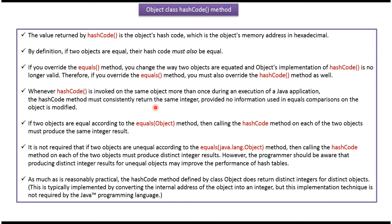Whenever the hashCode method is invoked on the same object more than once during the execution of a Java application, the hashCode method must consistently return the same integer. If two objects are equal according to the equals method, then calling the hashCode method on each of the two objects must produce the same integer result.